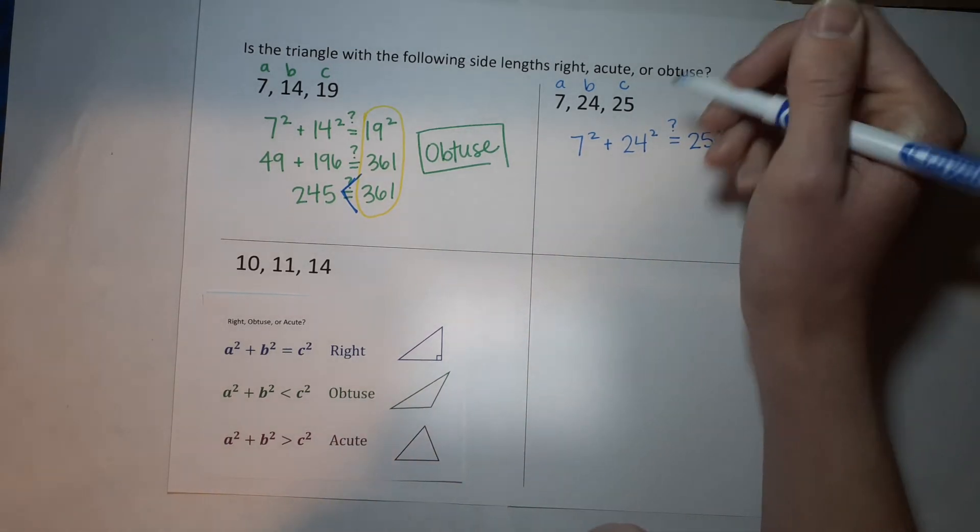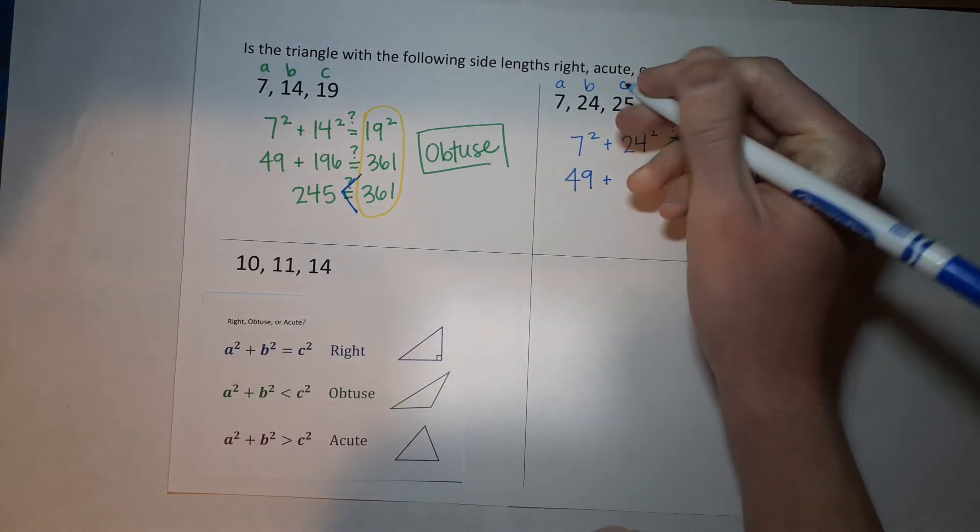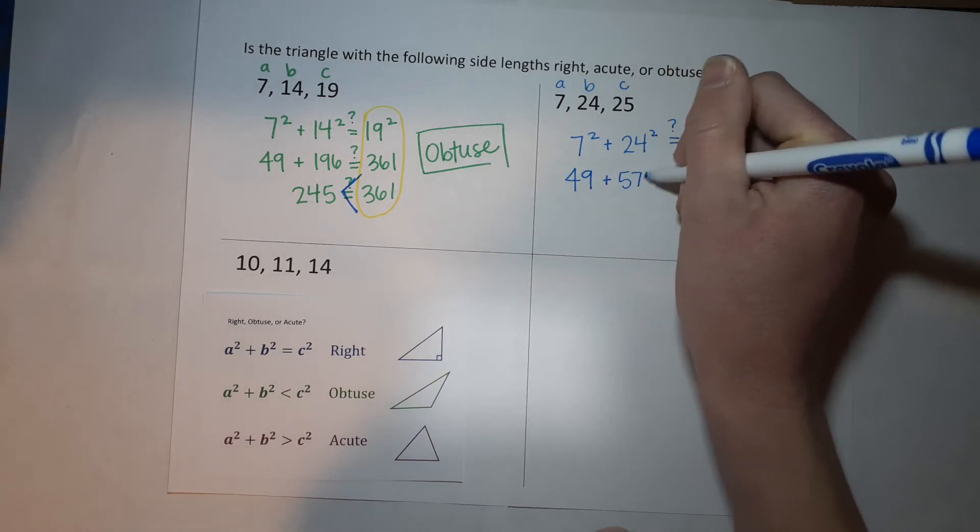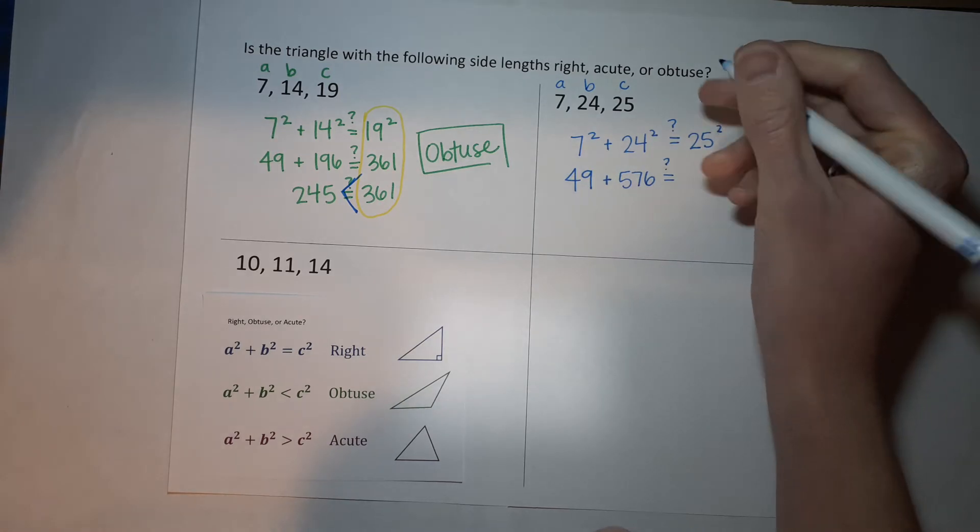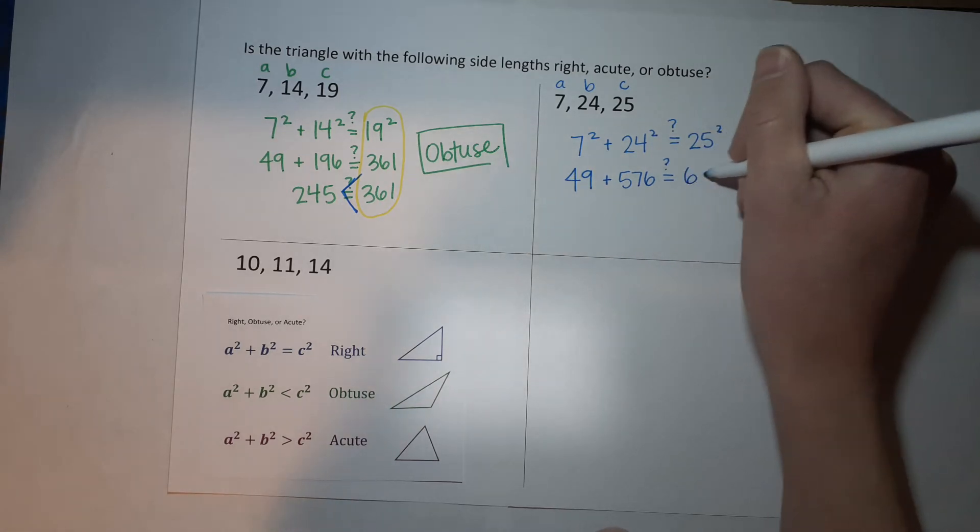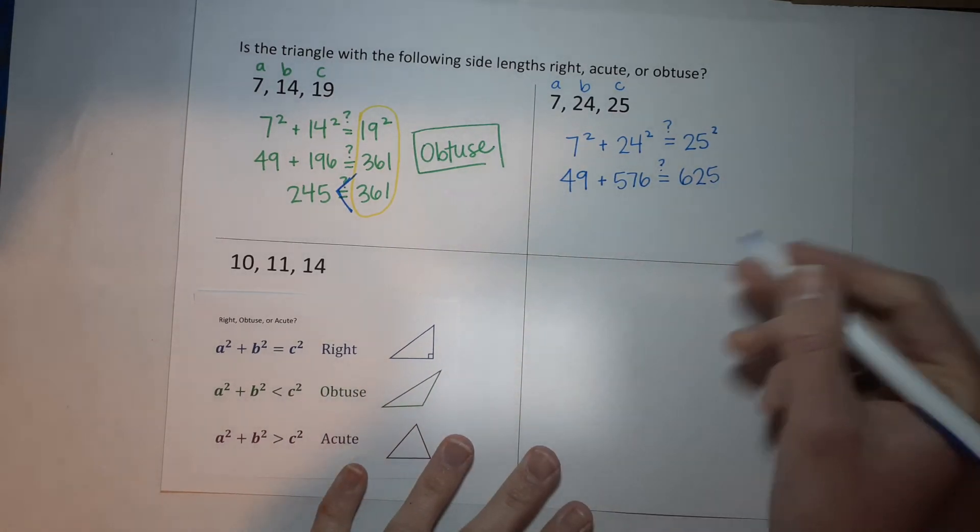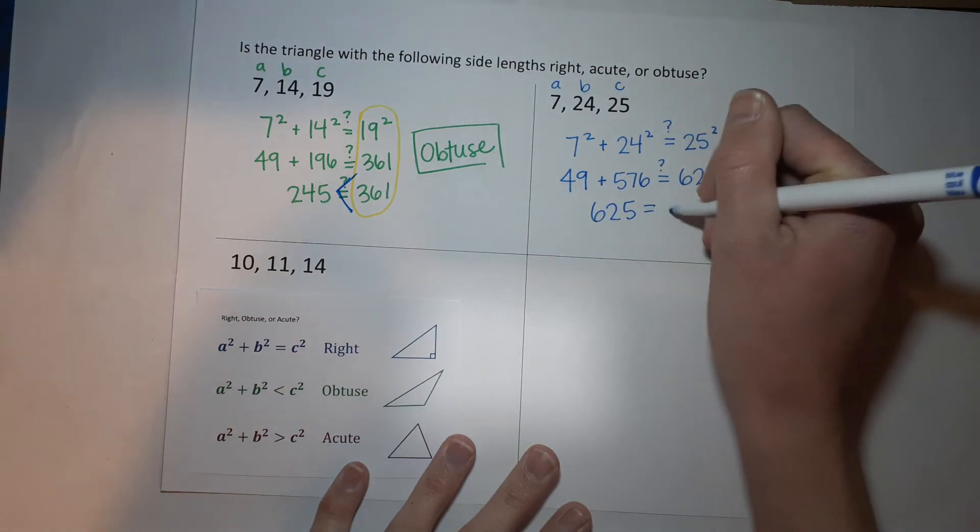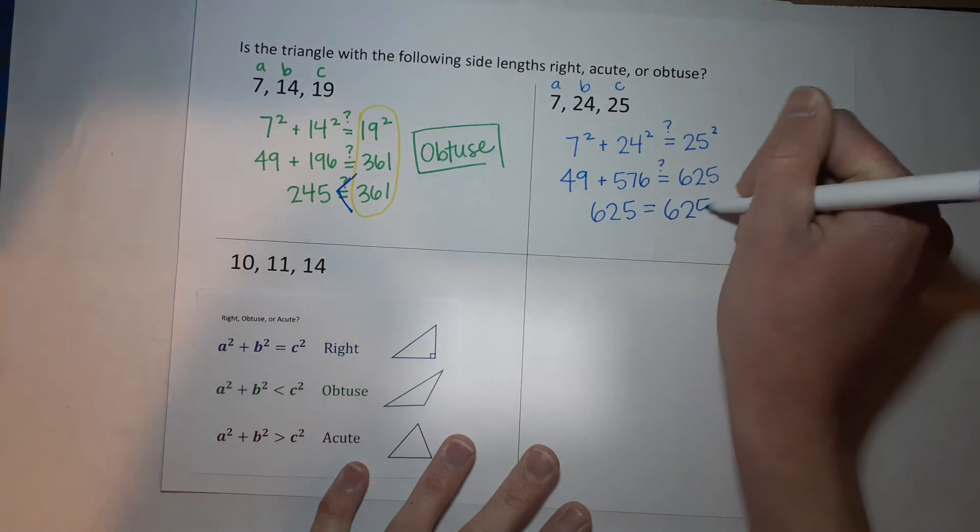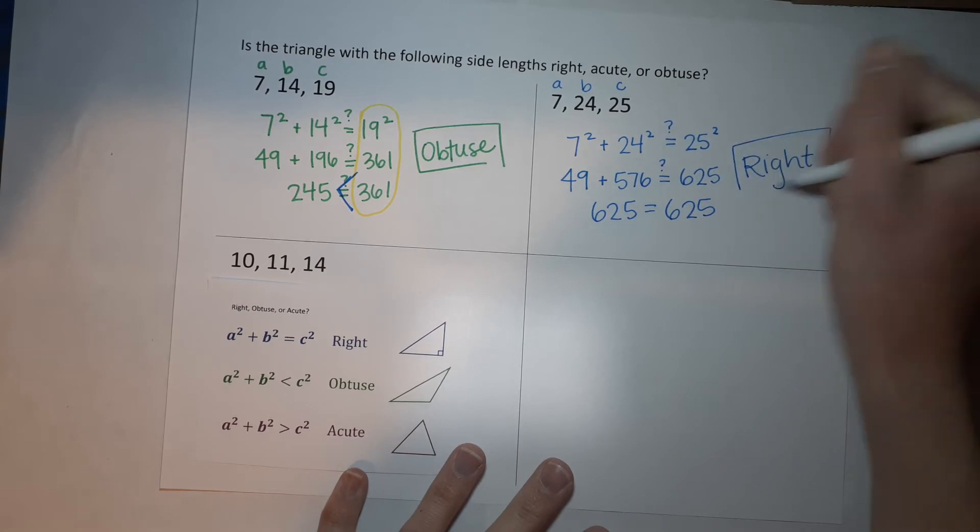So 7 squared gives me 49 plus 24 squared is 576. We're seeing if that is equal to 25 squared, which is 625. All right, 49 plus 576 is 625. Oh my gosh, they're equal to each other. What does that mean? That means this is a right triangle.